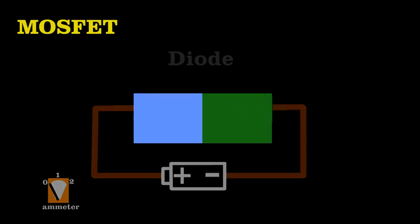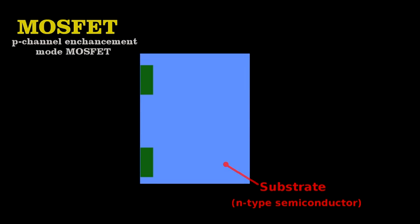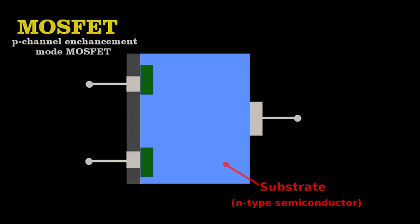Now to build a MOSFET, we take two such diodes and put them together so that each is reversed. Now this seems useless, because no current will ever flow through such an arrangement. But engineers embed this diode sandwich into the same type of semiconductor as the diode ends that touch. Then they place metal contacts at the ends of the diodes and on the block of semiconducting material.